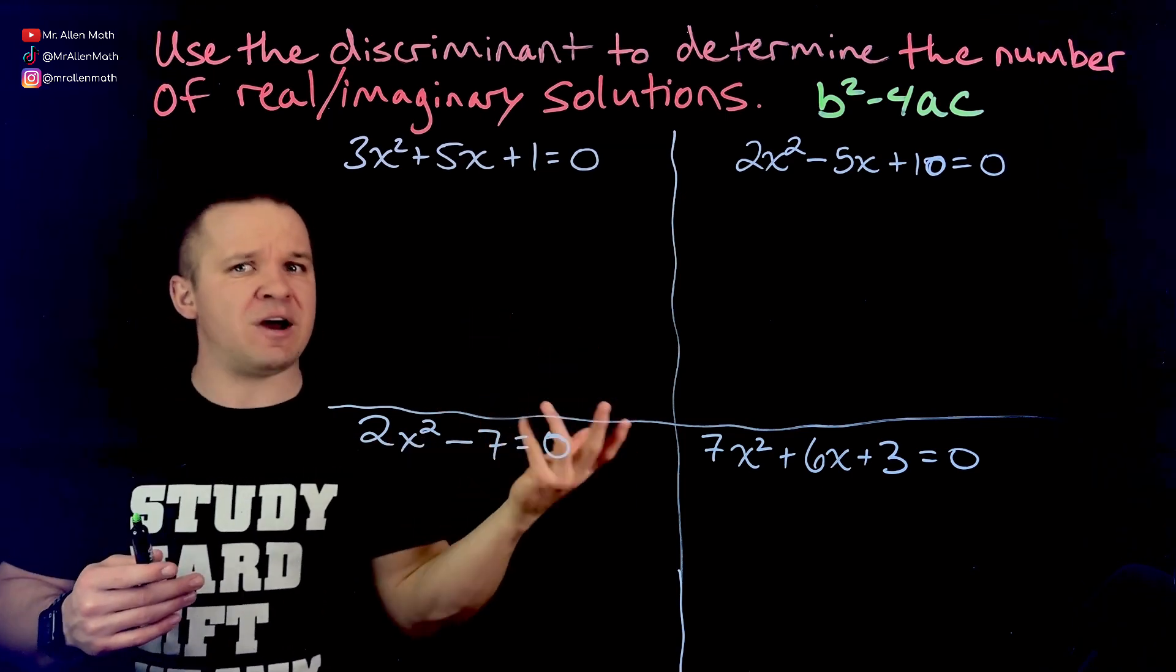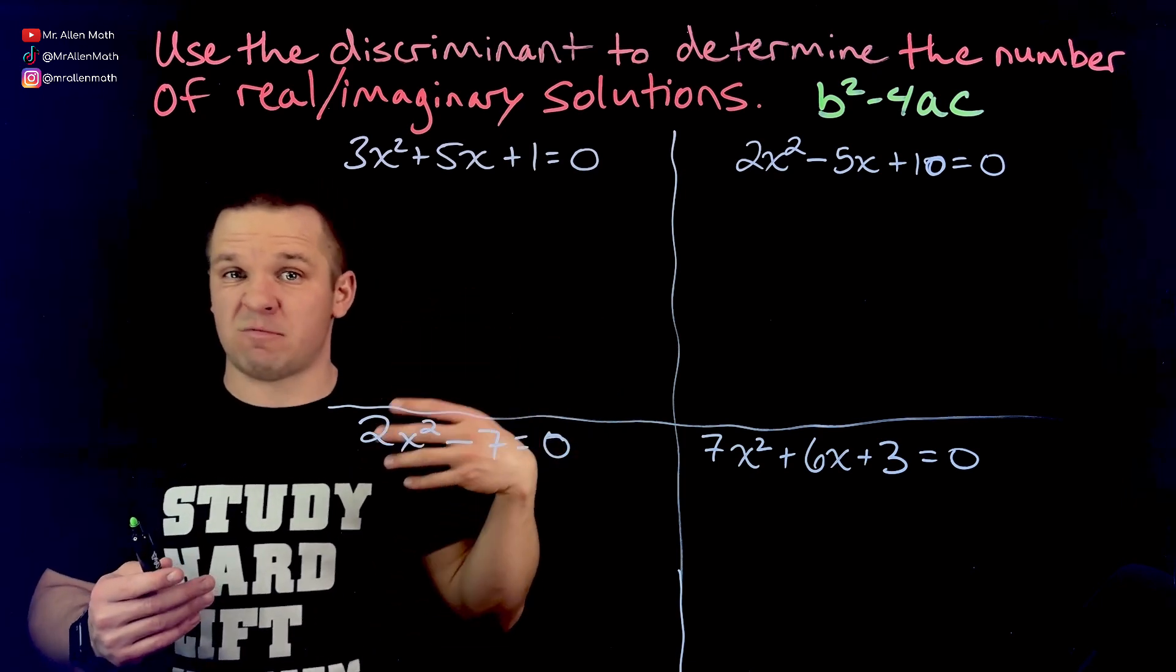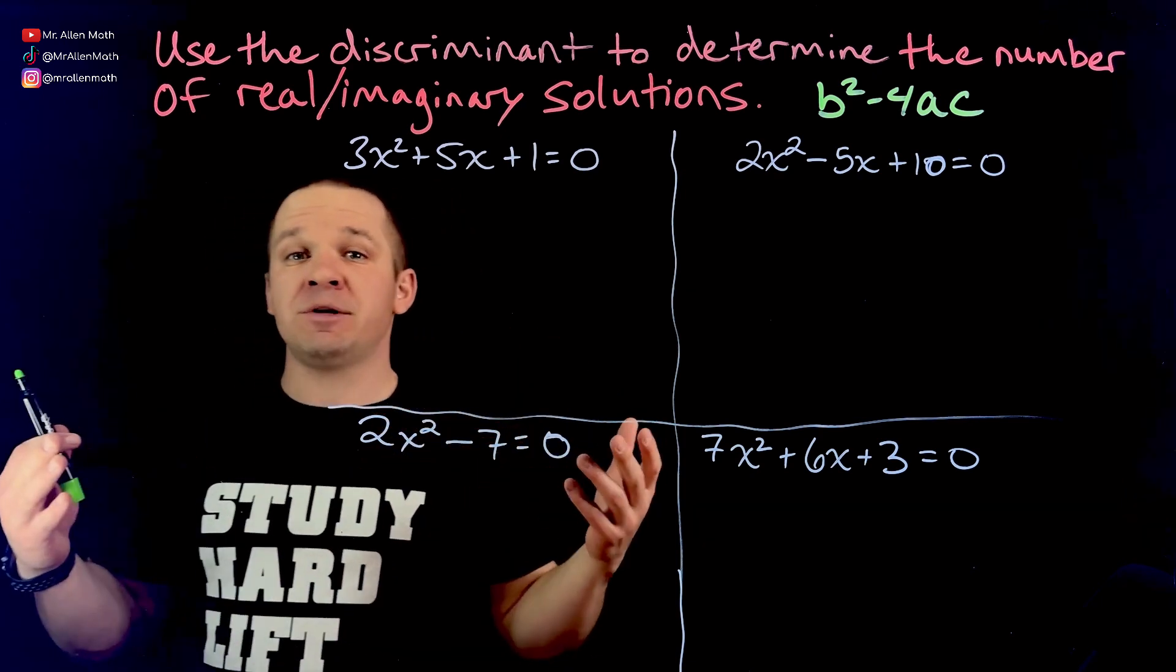So if I have positive values for it, I would be adding or subtracting positive numbers because of the plus or minus thing, which would give me two real solutions.